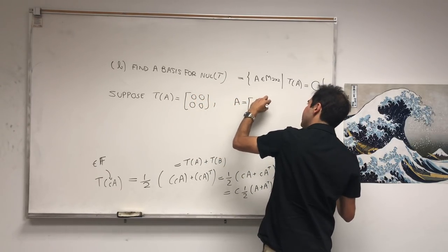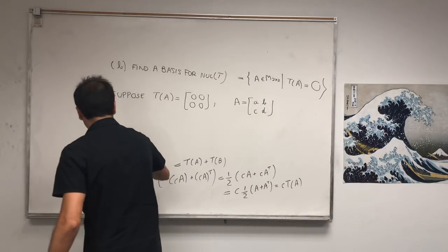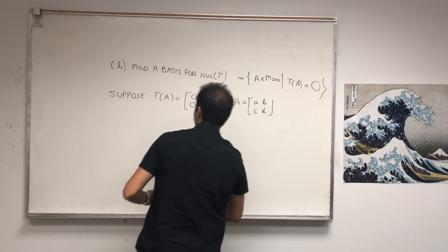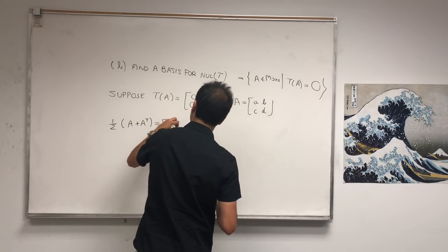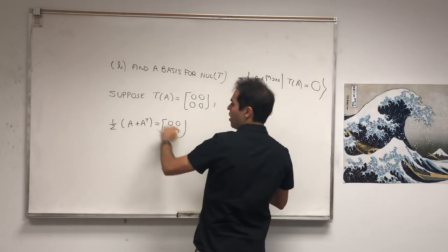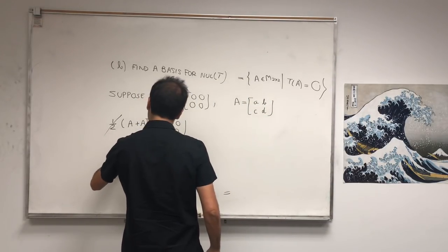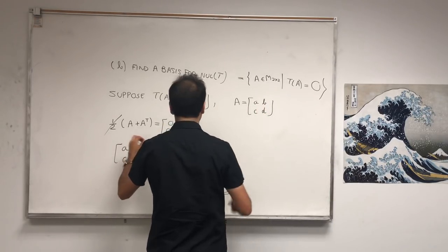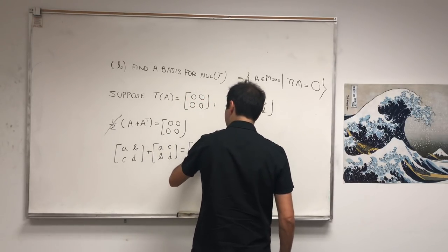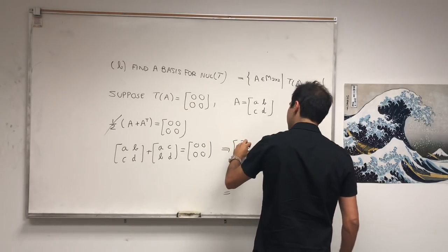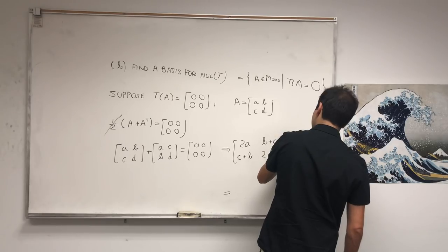Suppose A is of the form [a, b; c, d] and we want to find what a, b, c, and d are. Then we get one-half(A + A transpose) equals [0,0;0,0]. The one-half we can divide out, so we're left with [a, b; c, d] plus [a, c; b, d] equals [0,0;0,0], which gives [2a, b+c; c+b, 2d] equals [0,0;0,0].